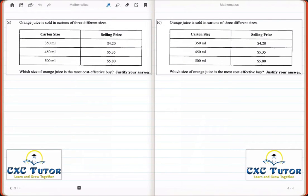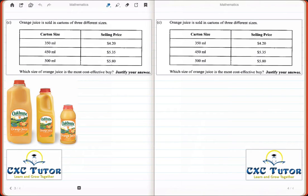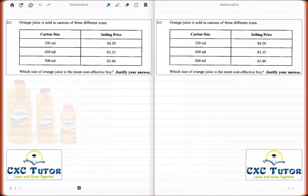In this question, orange juice is sold in cartons of three different sizes presented in a table that gives us the carton size and its selling price. The first juice contains 350 milliliters and is sold at $4.20. The second juice contains 450 milliliters and is sold at $5.35, and the last juice contains 500 milliliters and is sold at a price of $5.80.